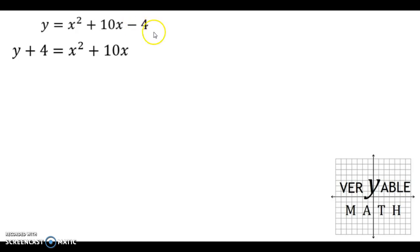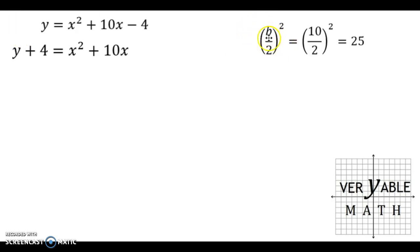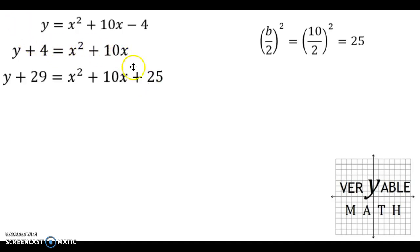Now that we've removed our old c value, we need to calculate what the new c value is going to be by taking b over 2 and then squaring it. Off to the side, we did b over 2 squared. Our b value here is 10, so we're taking 10 divided by 2, which is 5, then squaring it to make 25. So we know we need to add 25 to both sides in order to make the right-hand side a perfect square trinomial. We added 25 to both sides — 25 plus 4 is 29.